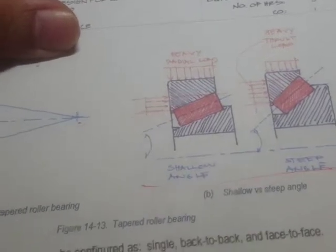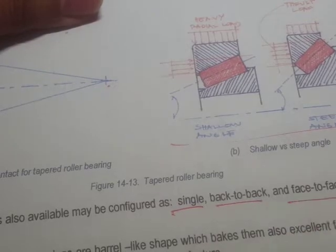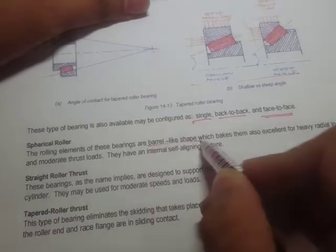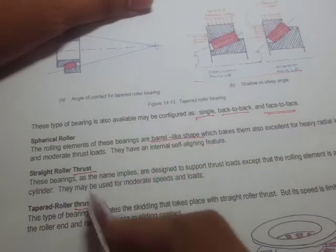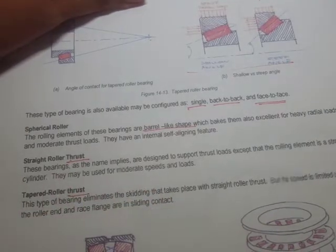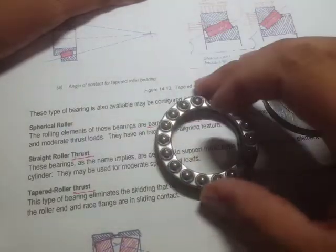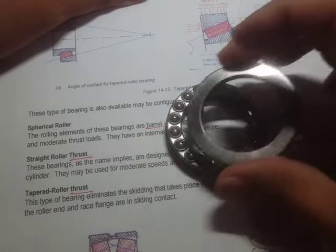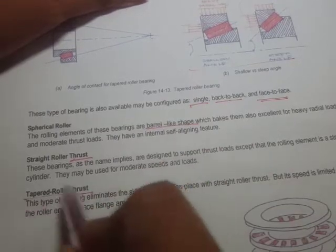This type of bearing is also available as single, or can be configured back-to-back or face-to-face, just like angular contact bearings. We also have the spherical roller, which has a barrel-like shape. The straight roller thrust bearing is a thrust bearing with a cylindrical rolling element, unlike a ball thrust bearing. When you say tapered roller thrust, the rolling element is tapered.